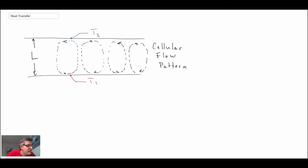You get a pattern like that forming. This is the case for T1 greater than T2, and this condition would exist for Grashof-Prandtl greater than 1708. The Nusselt number would be greater than one—it's no longer one, it's going to be greater than one.